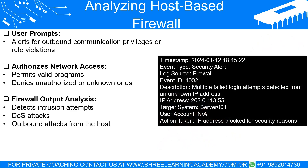Analyzing firewall output can help detect potential threats like intrusion attempts, denial of service (DoS) attacks, or outbound attacks from the host. By examining logs and alerts, you can identify suspicious patterns of behavior. For instance, numerous failed connection attempts from the same IP address might indicate an intrusion attempt. Similarly, a flood of traffic could suggest a DoS attack, while unusual outbound connections might mean your system is infected with malware and being used to attack others.